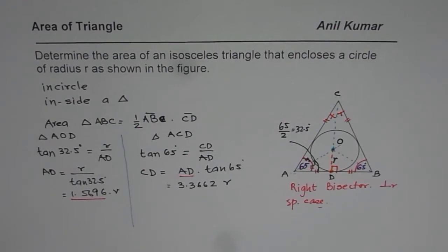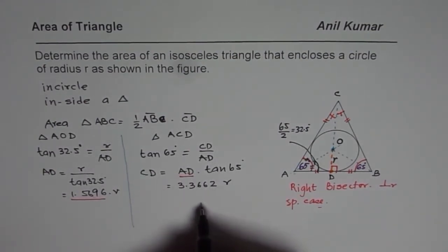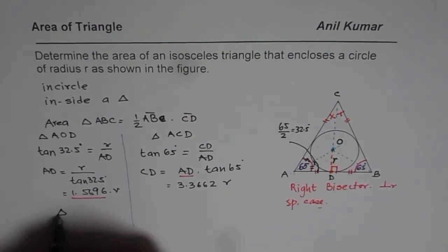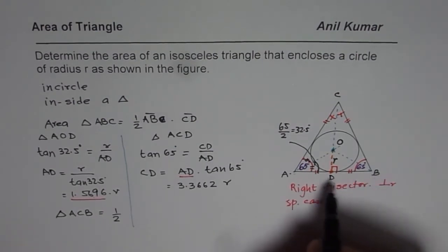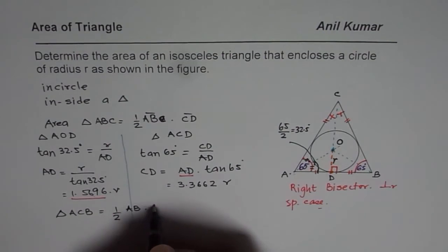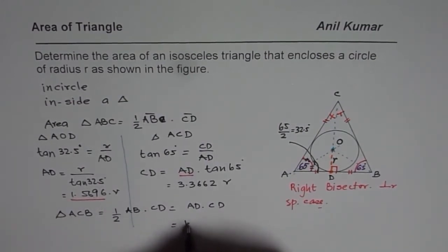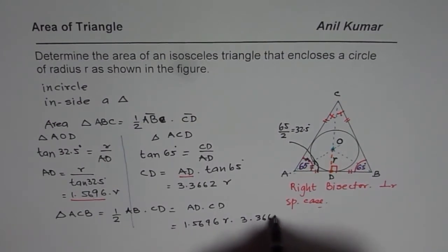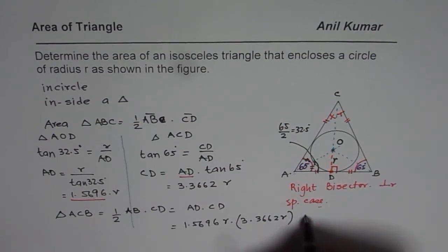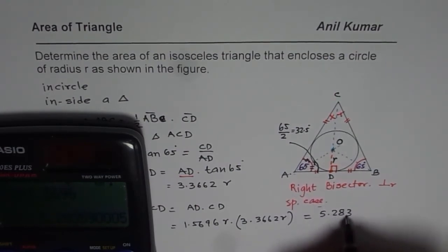Now we can find the area of the triangle. Area of triangle ABC = half of AB × CD. Since AB = 2 × AD = 2 × 1.5696R, we have half of AB = AD = 1.5696R. So Area = AD × CD = 1.5696R × 3.3662R. Multiplying: 1.5696 × 3.3662 ≈ 5.2835. Therefore, the area of the triangle equals 5.2835R².